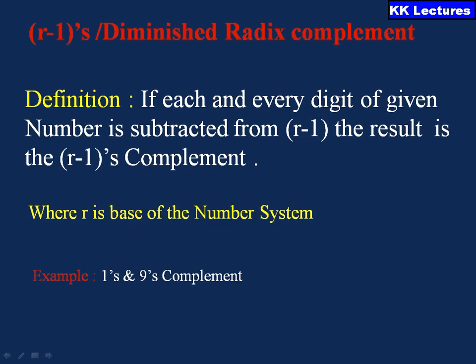Let us see what exactly the R minus 1's complement is. If each and every digit of the given number is subtracted from R minus 1, the result is the R minus 1's complement, where R is the base or radix of that particular number system. The best examples of R minus 1's complement are the 1's complement and the 9's complement.